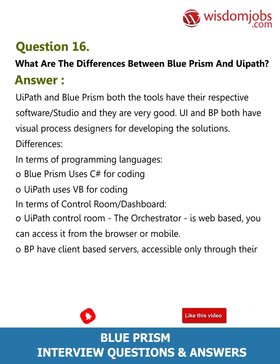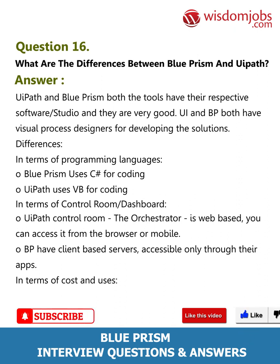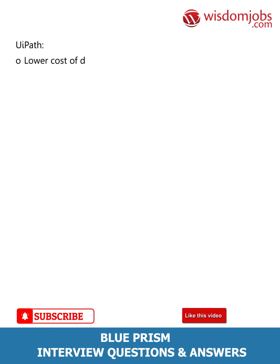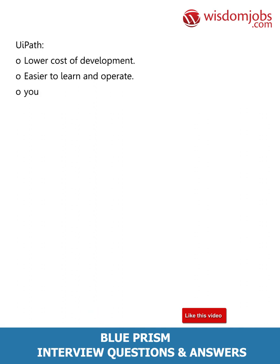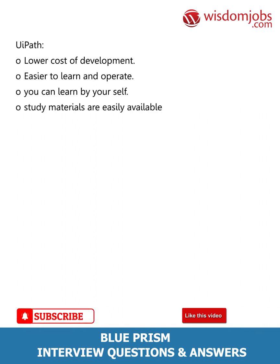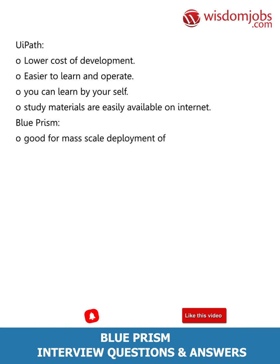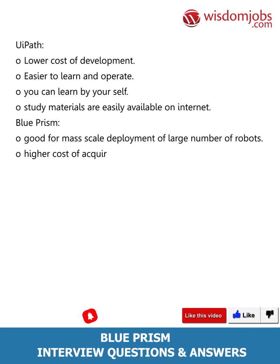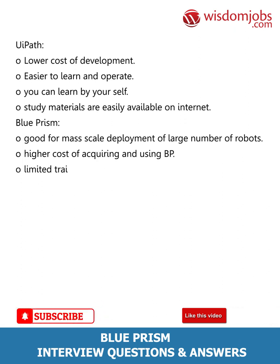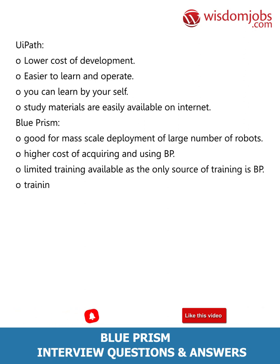In terms of cost and usability: UiPath offers a lower cost of development, is easier to learn and operate, can be learned independently, and study materials are easily available on the internet. Blue Prism is good for mass-scale deployment of large numbers of robots, but has a higher cost of acquiring and using it. Limited training is available as the only source of training is Blue Prism itself, and the training cost of Blue Prism is too high.